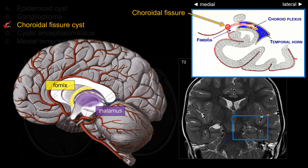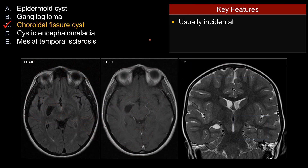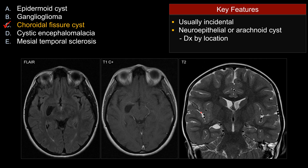You can also view the choroidal fissure as the far lateral extension of the ambient cistern. Choroidal fissure cysts are usually incidental and typically very small. The differential diagnosis is based on the typical location — within the choroidal fissure, sitting above the hippocampus — not on histological content. In other words, a choroidal fissure cyst may represent a neuroepithelial cyst or an arachnoid cyst.